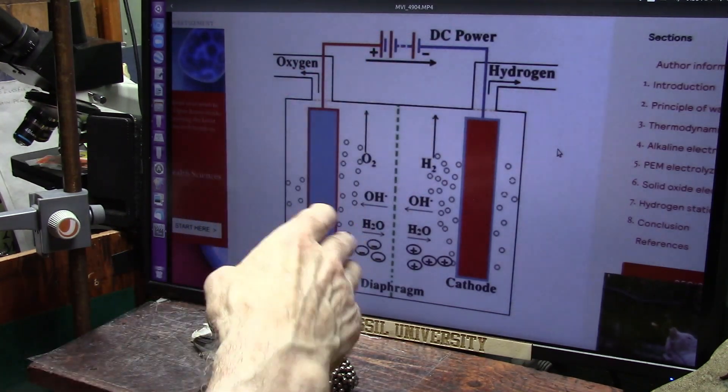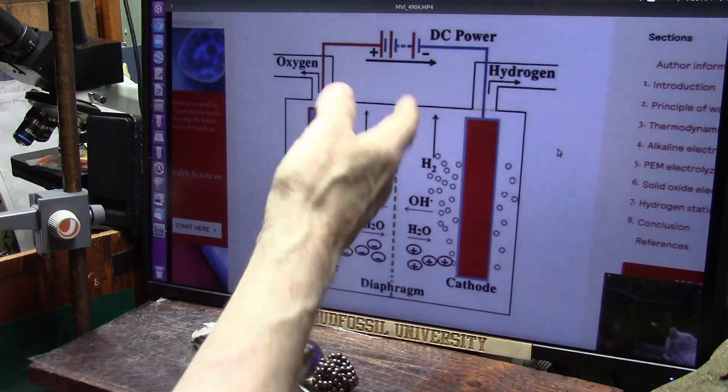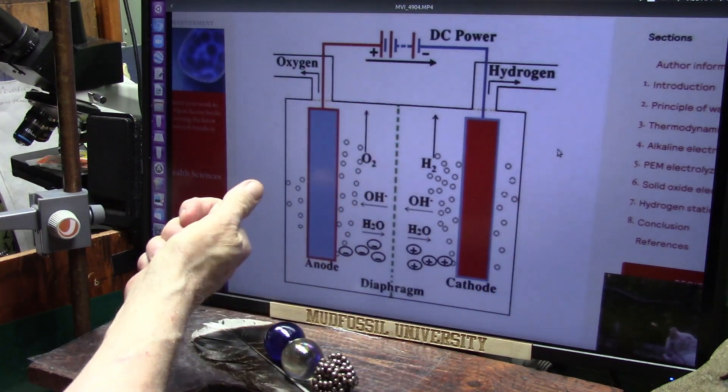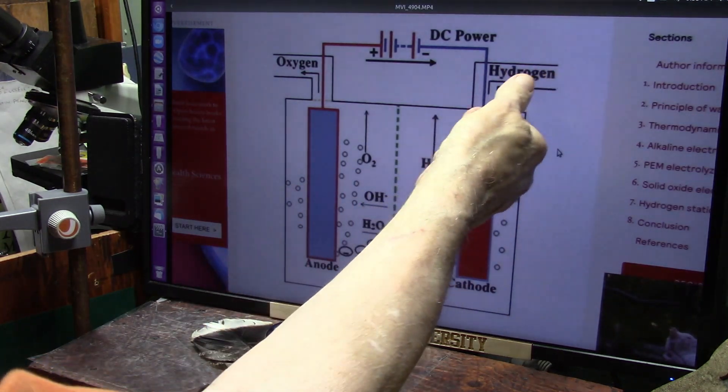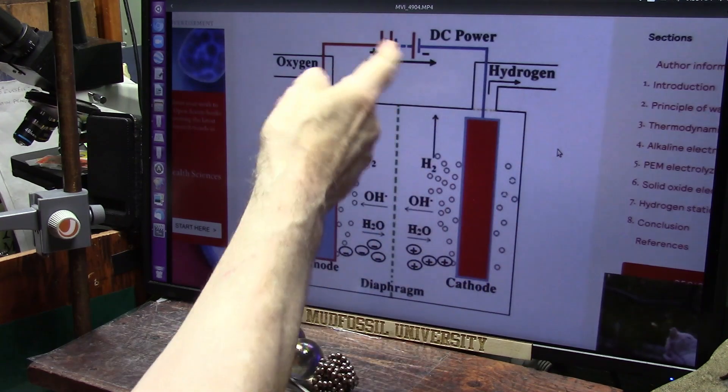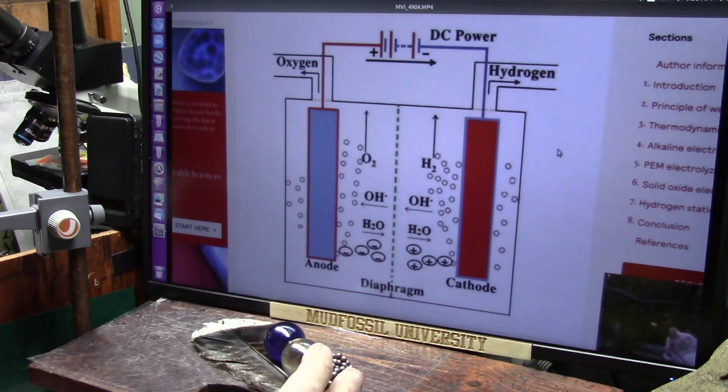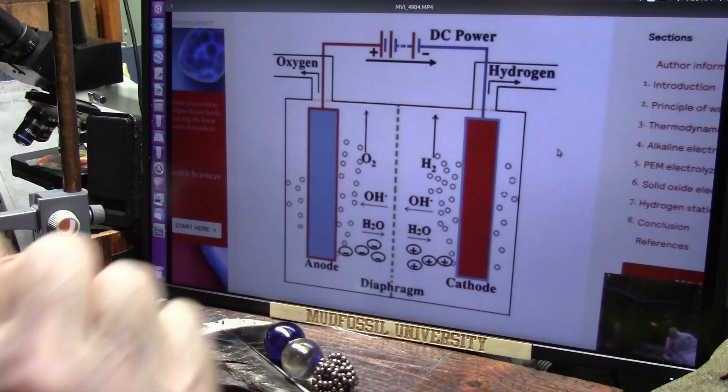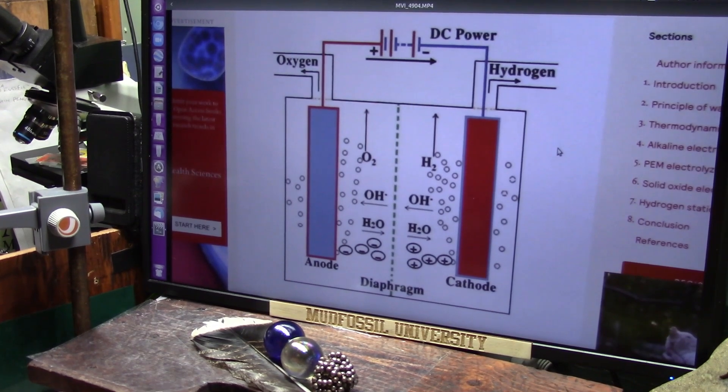DC power. It's either a battery, or it's a generator, or it's coming off the grid, but you need power to force the electrons across this membrane and out as raw hydrogen. But if you don't have electricity, you can't do it. Well, what is electricity? Electricity is pushing electrons. Let's see if there's another way we can do this.